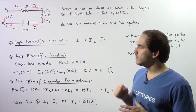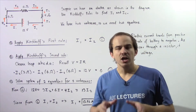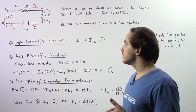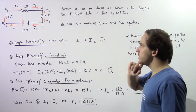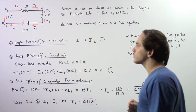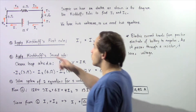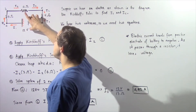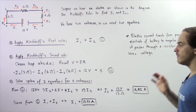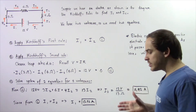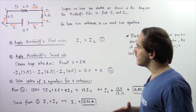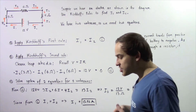Let's look at the following example in which we're going to apply Kirchhoff's rules that we spoke about in a previous lecture. Suppose we have the following electric circuit as shown in this diagram. We have 3 resistors and a single battery with an EMF of 12 volts. We want to use Kirchhoff's rules to calculate what I1 and I2 are.